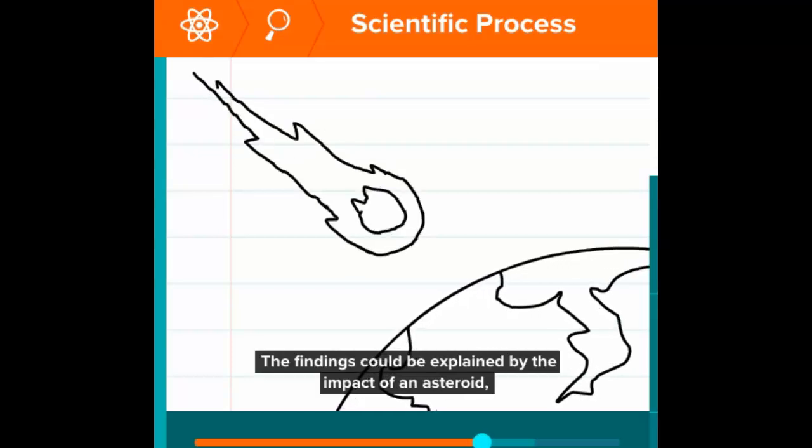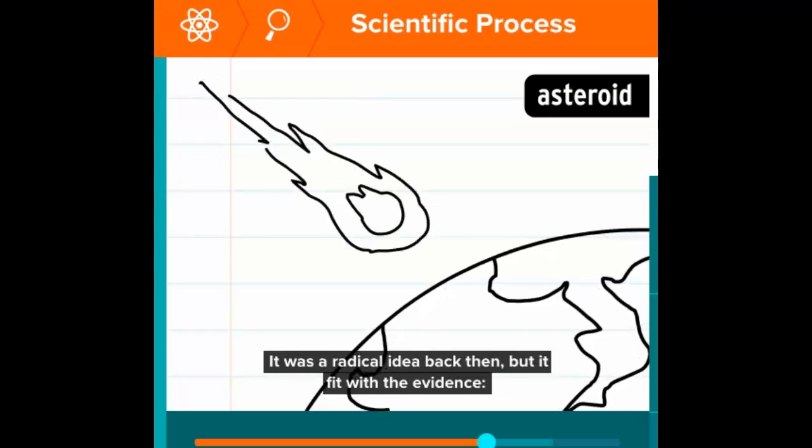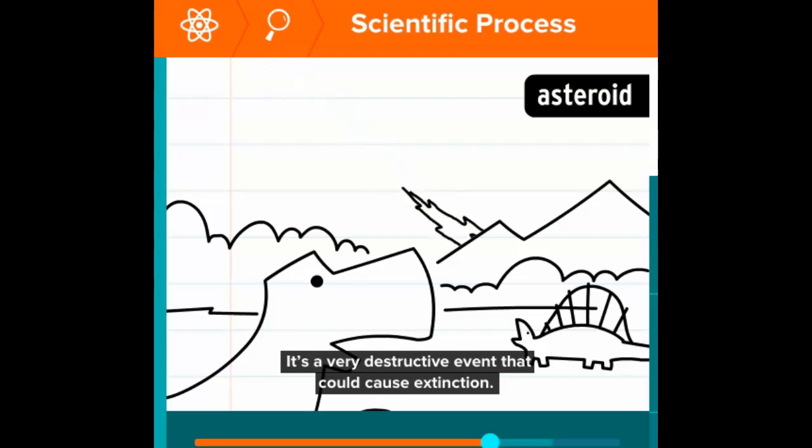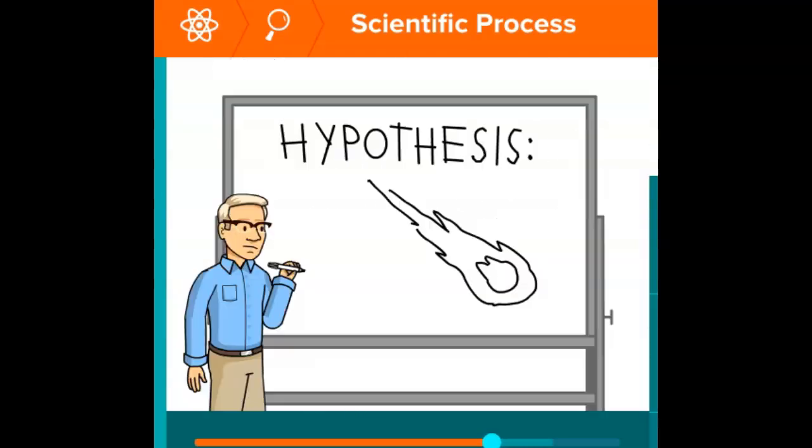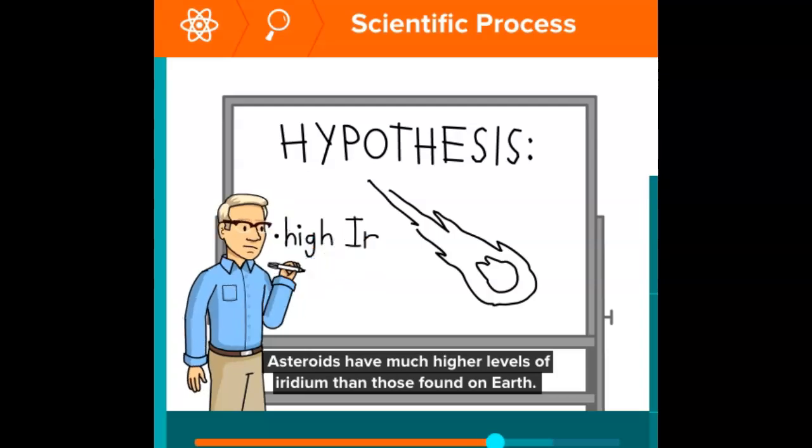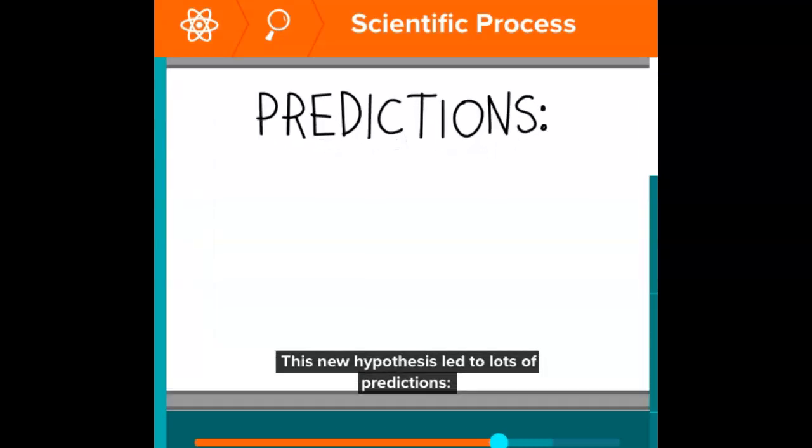The findings could be explained by the impact of an asteroid—a big rock that orbits the Sun. It was a radical idea back then, but it fit with the evidence. It's a very destructive event that could cause extinction. Asteroids have much higher levels of iridium than those found on Earth, and they've got no plutonium. This new hypothesis led to lots of predictions.